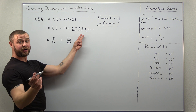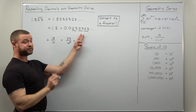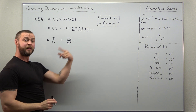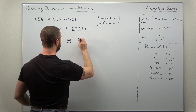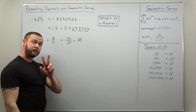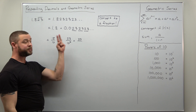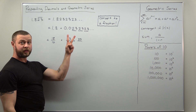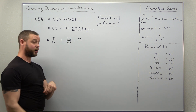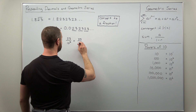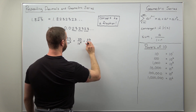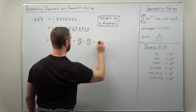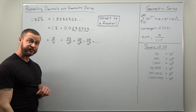Each pair of digits 2, 3 that repeat thereafter will get 23 in the numerator over the next powers of 10, but we're grouping them in powers of 2 — so 100. So we get 10 to the 5th, then 23 over 10 to the 7th, and so on.